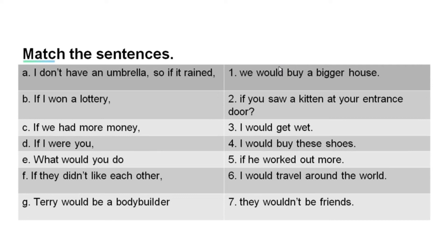Now, time for you to practice on your own. Match the following sentences. A: 'I don't have an umbrella, so if it rained.' B: 'If I won a lottery.' C: 'If we had more money.' D: 'If I were you.' E: 'What would you do?' F: 'If they didn't like each other.' G: 'Terry would be a bodybuilder.' Match to: 1: 'We would buy a bigger house.' 2: 'If you saw a kitten at your entrance door.' 3: 'I would get wet.' 4: 'I would buy these shoes.' 5: 'If he worked out more.' 6: 'I would travel around the world.' 7: 'They wouldn't be friends.'